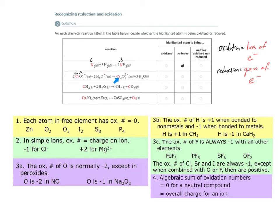Now what's the oxidation number of these chromium atoms in the second species? Oxygen is again negative two, and there are seven for a total of negative fourteen. I need the sum to be positive twelve, because positive twelve plus negative fourteen equals the charge of this ion. With two chromium atoms, each must have an oxidation number of plus six. So chromium was neither oxidized nor reduced — no electrons were lost or gained because the oxidation number remained the same.